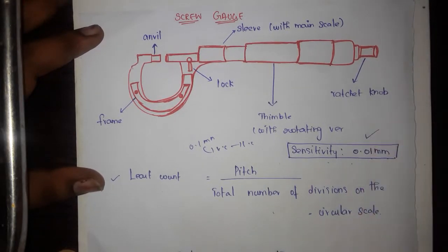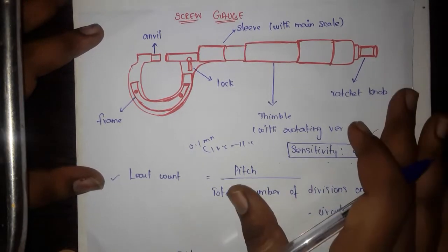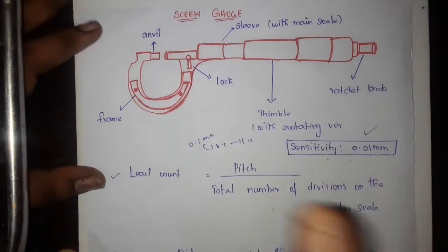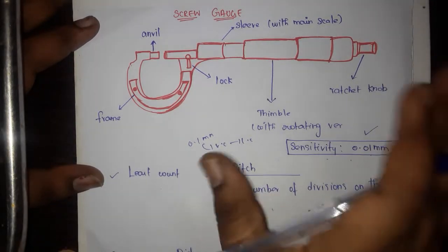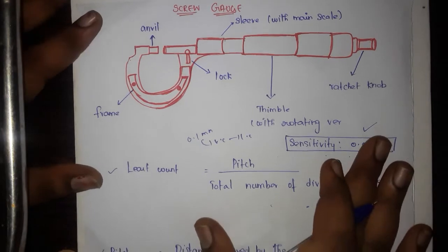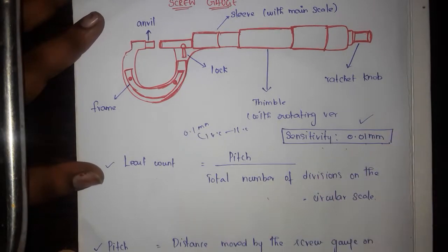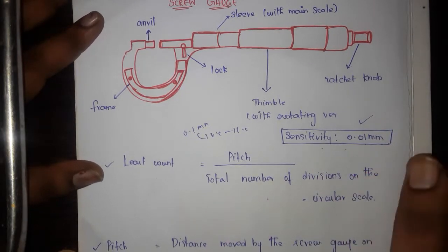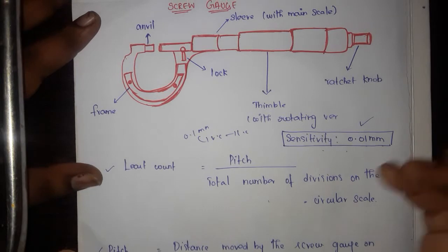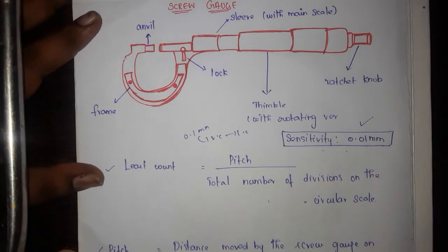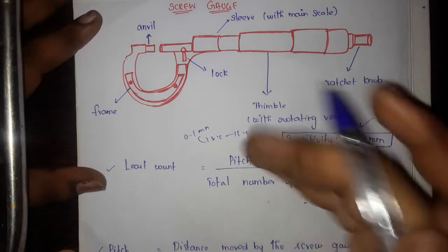The Vernier Caliper is a measuring instrument. We can use it to measure the wire diameter and the width of a sheet. The Vernier Caliper is a precise instrument — its least count is 0.1 mm.